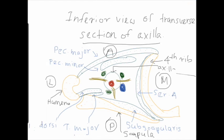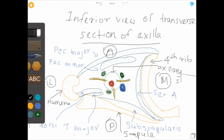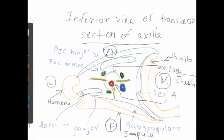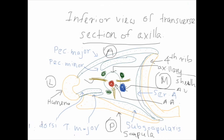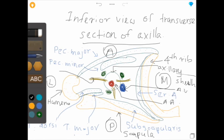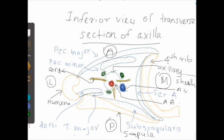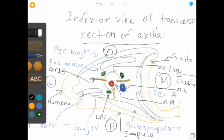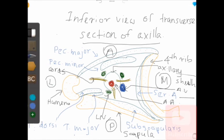Now I am labeling the contents of the axilla: the axillary sheath, the axillary artery which is within the axillary sheath, the axillary vein, the cords of the brachial plexus which are also within the sheath, and the axillary lymph nodes. This is the general view of the axilla. As a medical student you should know how to draw this diagram because there are several clinically important aspects in this region. So keep on practicing.